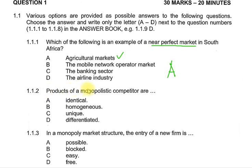Question 1.1.2: Products of a monopolistic competitor. We need to look at our keyword — monopolistic. We know very well that these products are differentiated. So D is the correct answer for 1.1.2.